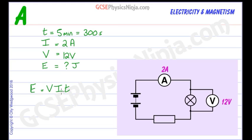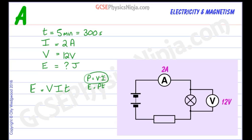Where does this equation come from? It comes from two other equations. The first is that power is equal to voltage times current. The second is that energy is equal to power times time. If you substitute power equals voltage times current into where the P is in the energy equation, we get E = VIT. That's where this equation comes from — it's quite a useful one to remember.